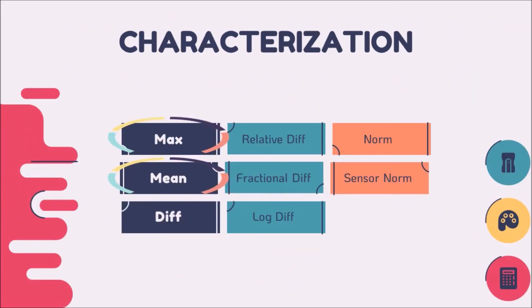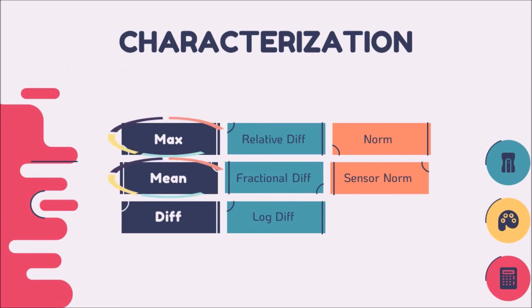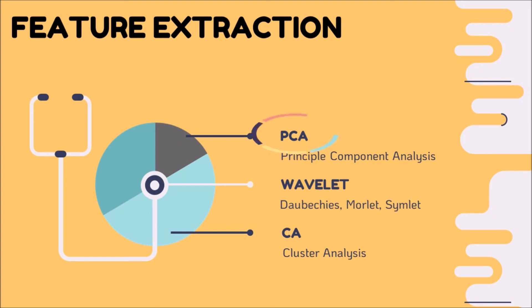Number three is characterization. Feature extraction uses the maximum value or average value of all signals. Some feature extraction methods are ordinary statistical methods such as calculation of difference, relative difference, fractional difference, log difference, and normalization. The most popular characterization methods are maximum and average value. Number four is feature extraction, which reduces the dimension of the feature factor matrix. Electronic nose for diabetes detection uses PCA, Z-score, and CA. The most popular feature extraction method is PCA.